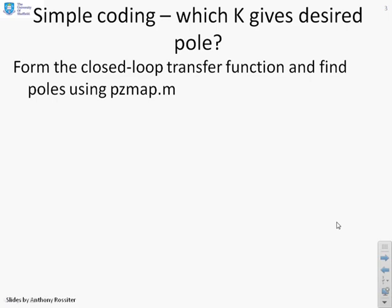If we want to do some simple coding, which compensator gain K will give us the pole that we want? The tool that we'll use if we want to keep things simple is pzmap.